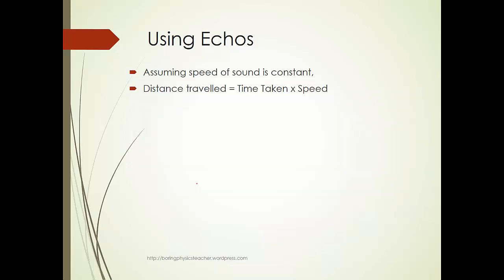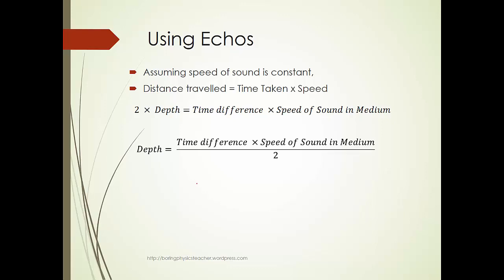So, again, assuming the speed of sound is constant, we use this particular general formula: distance traveled equals speed times time taken. So, we apply this particular formula. Instead of the distance to the wall, it's depth. And, of course, an alternate formula is that you just shift the 2 below. Okay? So, another way to interpret is that the depth is actually half the time difference times the speed of sound in medium.